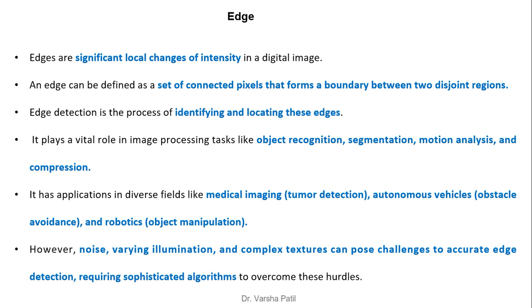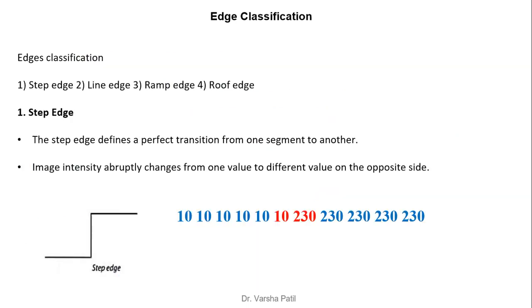However, noise, varying illumination, and complex textures can pose challenges to accurate edge detection, requiring sophisticated algorithms to overcome these hurdles. The classification of edges includes: step edge, line edge, ramp edge, and roof edge.